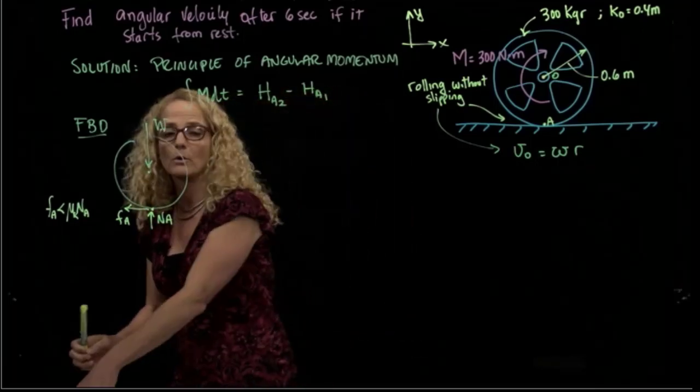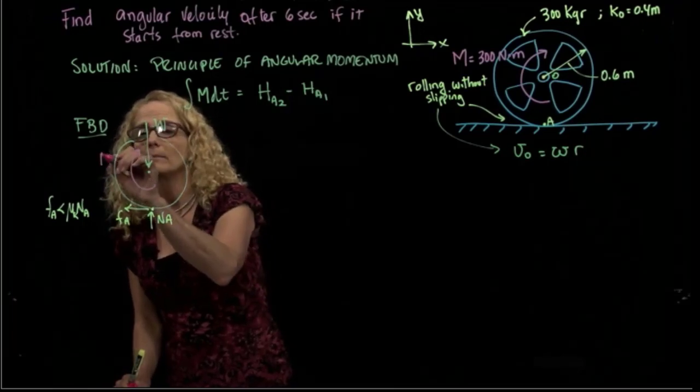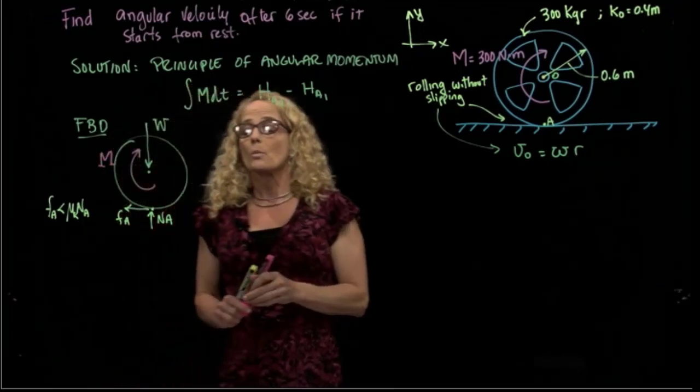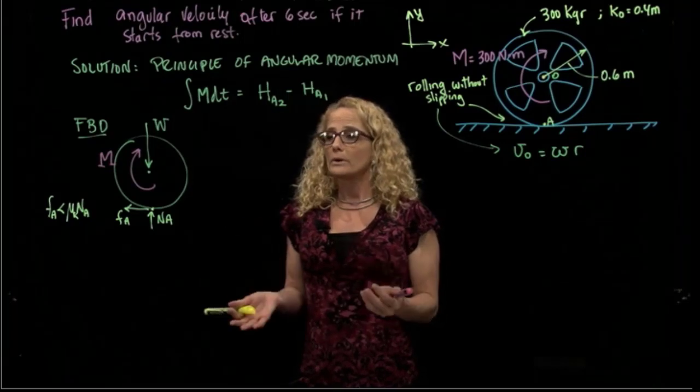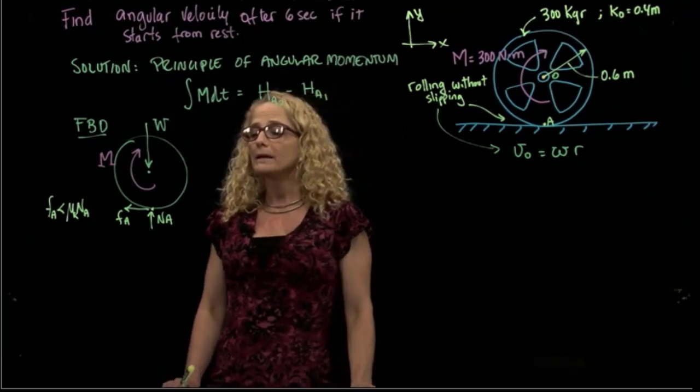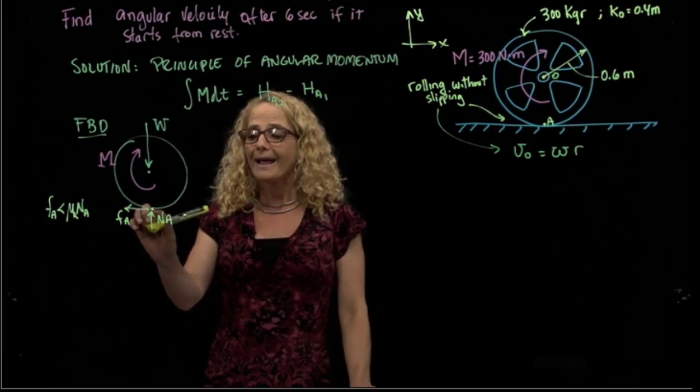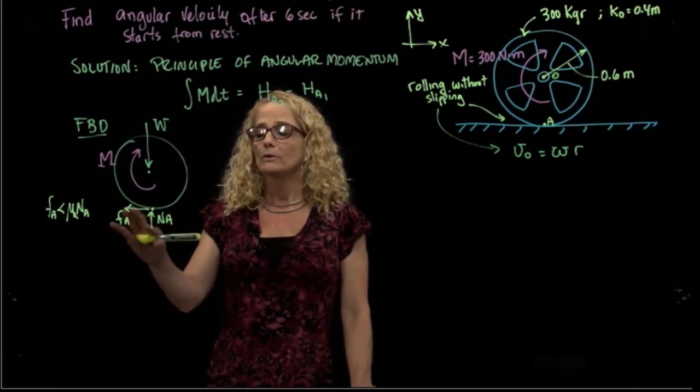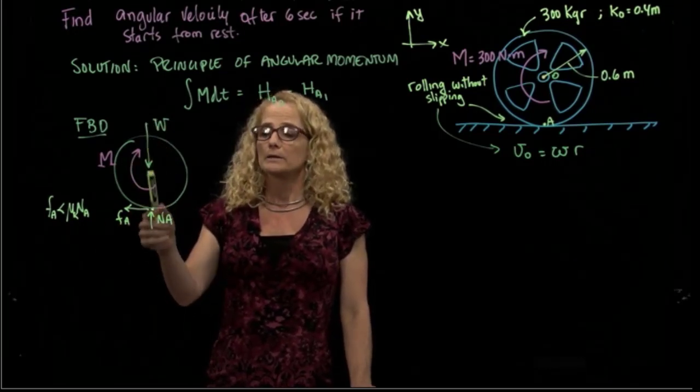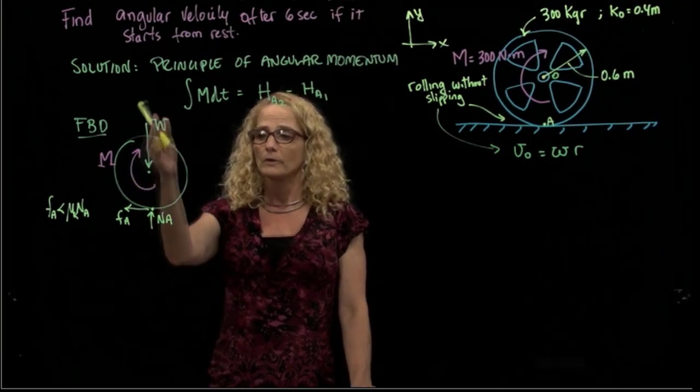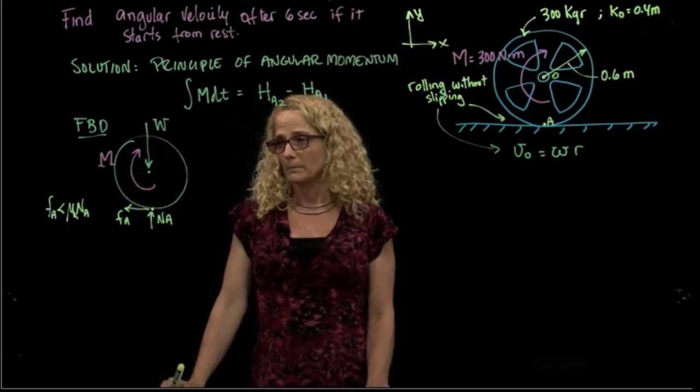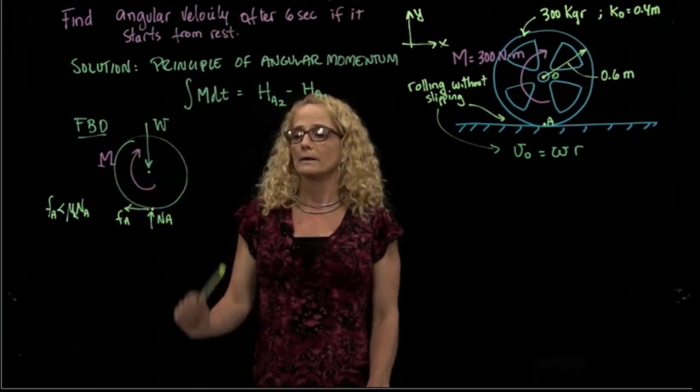We have the moment applied to my wheel. So which one will be the best point to apply my momentum? It will be with respect to point A, because I will eliminate those two variables and I will also eliminate the moment caused by the weight because it doesn't have any moment arm. So I will have only the moment applied.